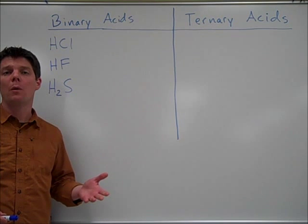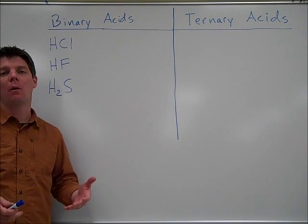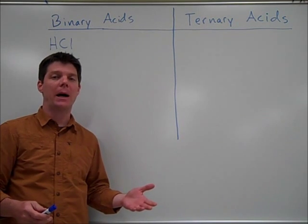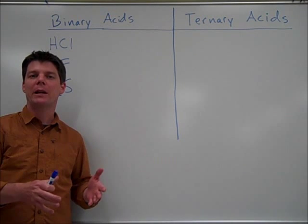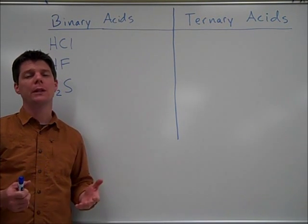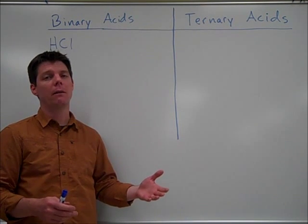The names of binary acids will always begin with the prefix hydro, and then the ending is going to come from the second element which is part of the binary acid. Binary acids are called binary because they are acids which contain only two elements. They'll always have a hydrogen, and then they'll have another non-metallic element.